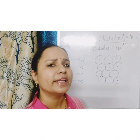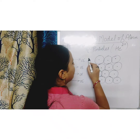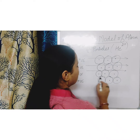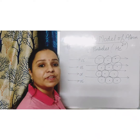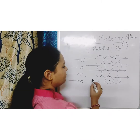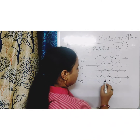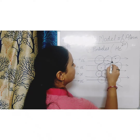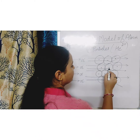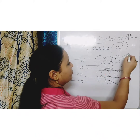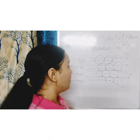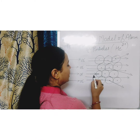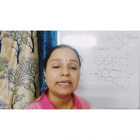Now let's discuss what he found. He found that most of the alpha particles passed straight through without any deflection. Very few of them deflected through small angles. But there were rare cases where the alpha particle completely turned back.